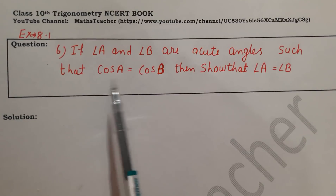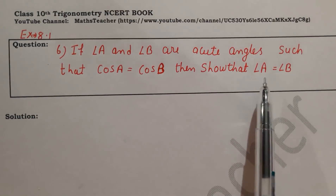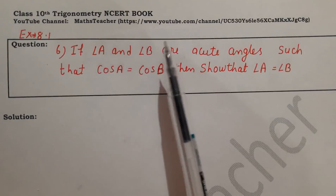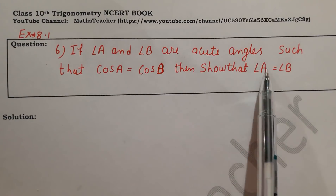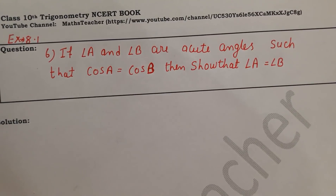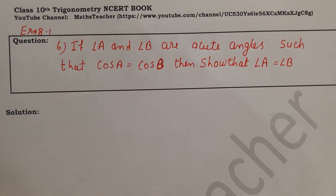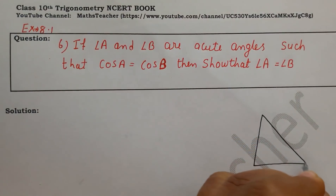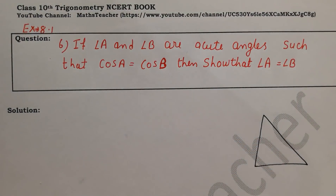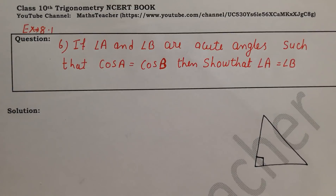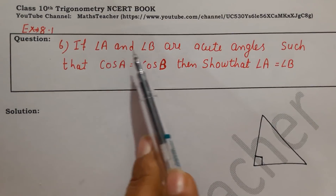This is what we need to prove. Now, whenever you have a trigonometry question, you think of only one triangle — a right angle triangle. So first of all, we will draw a right angle triangle. Trigonometry questions are always about right angle triangles. The sin, cos, and other ratios are only for acute angles — for the 90 degree angle itself there is no trigonometry ratio.